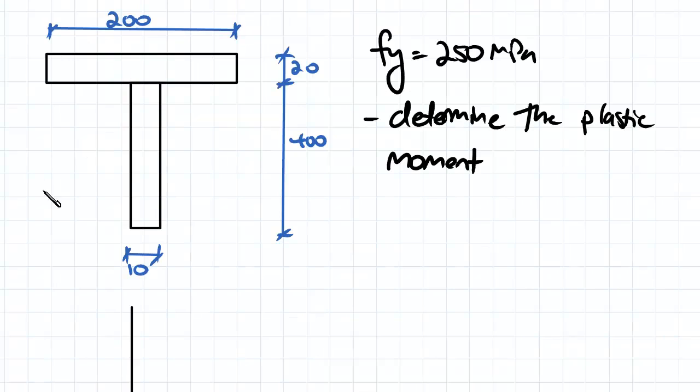So we've got our T section here. What you might notice is that the flange and the web are of equal area. So the total area of our flange is 4,000 millimeters squared and the total area of the web is also 4,000 millimeters squared.